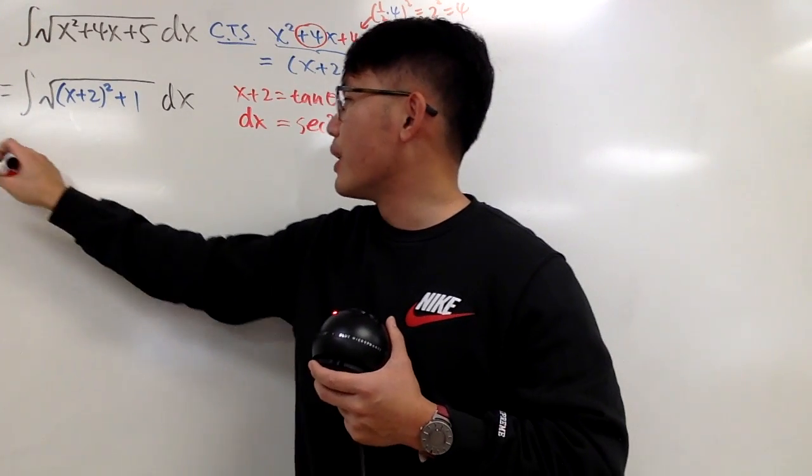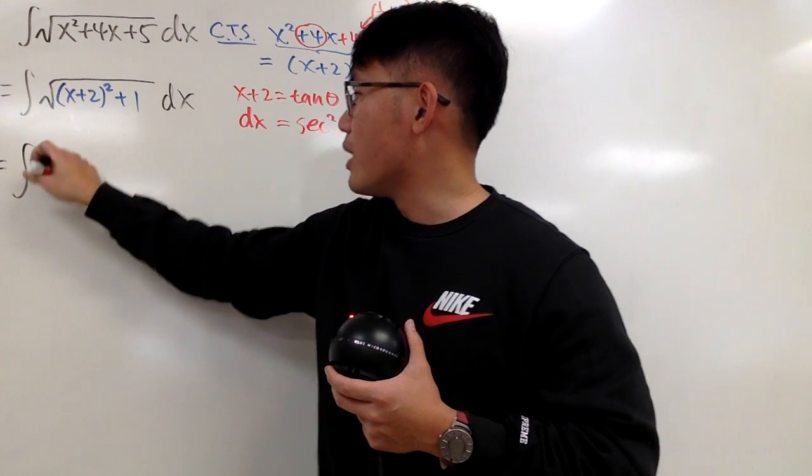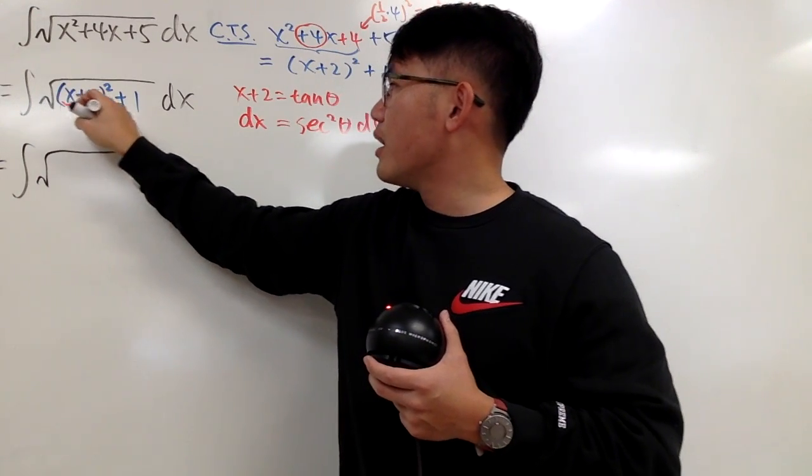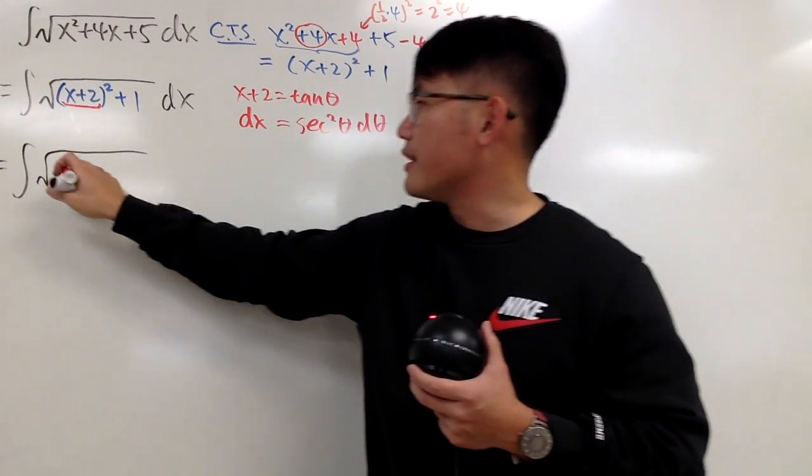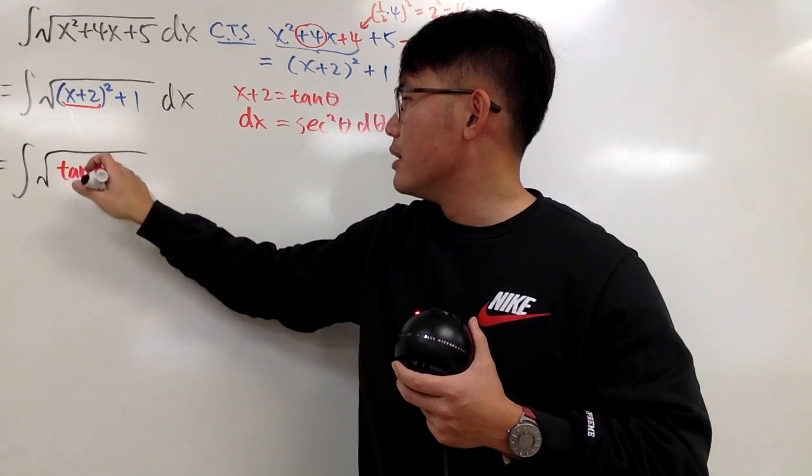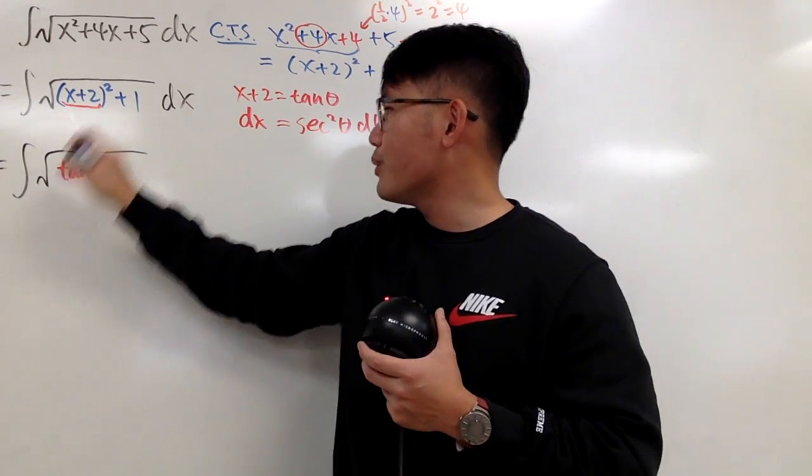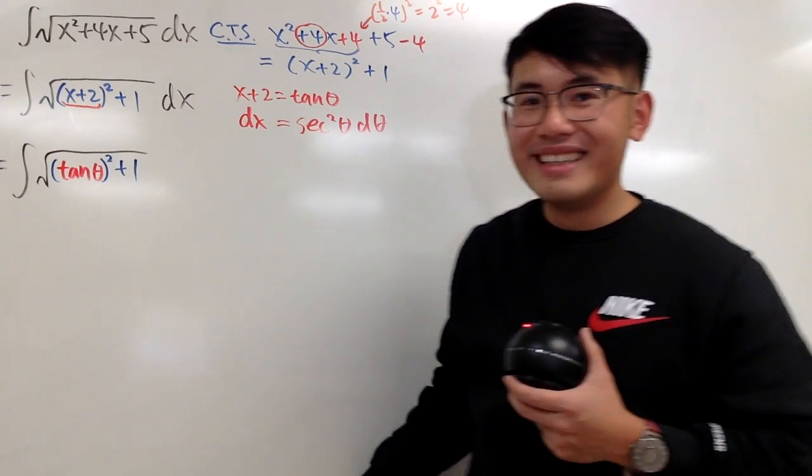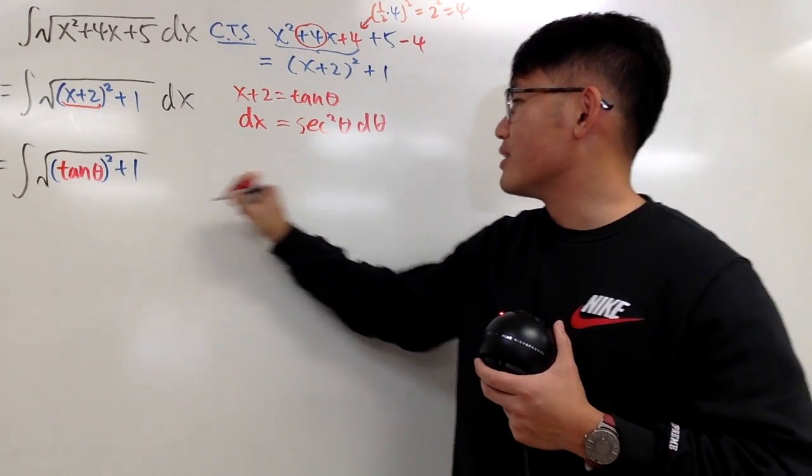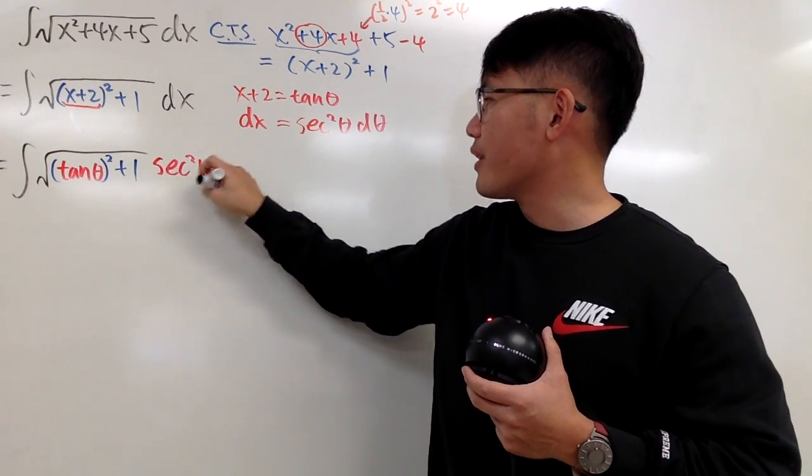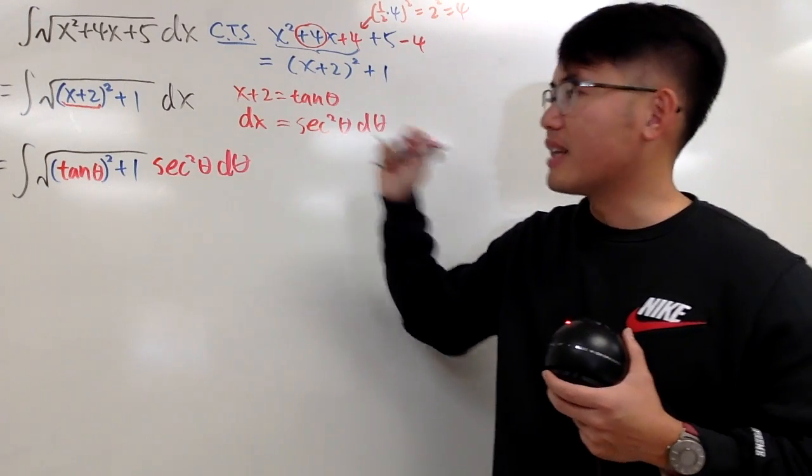Now, we see that this right here is just the integral, and then we have the square root. This right here, remember, is our tangent theta. So let's put that down. Tangent theta. And of course, we have the blue portion, which is the square, and then the plus 1. And then the dx is this. So I also write down secant square theta d theta, like that.